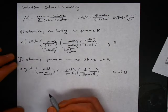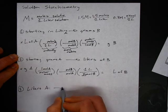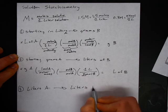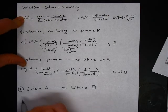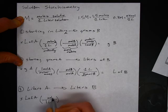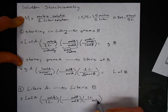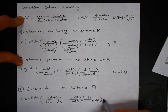The third problem type is a liters to liters solution problem — liters of A to liters of B. So if I have a certain number of liters of A, I'm using a molarity ratio here. Every liter has a certain number of moles, which will be given to you. Then you go from moles of A to moles of B, and again every liter has a certain number of moles from molarity, which will be provided. So I end up with liters of B.